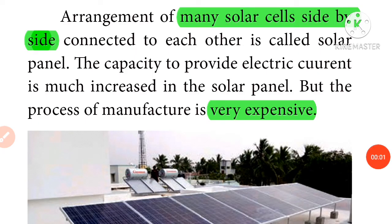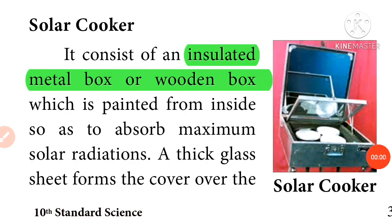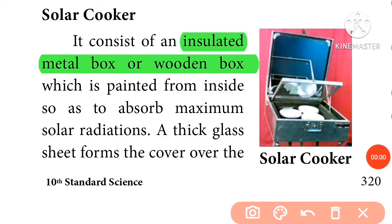The solar cooker consists of an insulated metal box or wooden box which is painted black on the inside so as to absorb maximum solar radiation. A plane mirror reflector is attached to the box to concentrate sunlight, and food is cooked by the energy radiated by the sun.